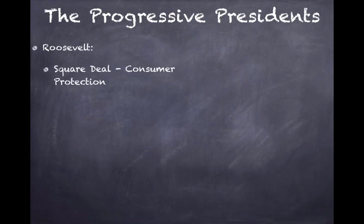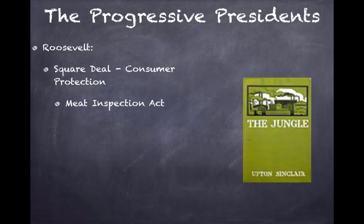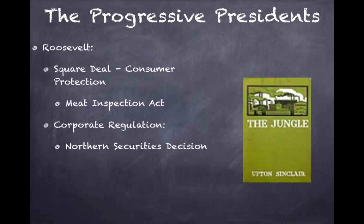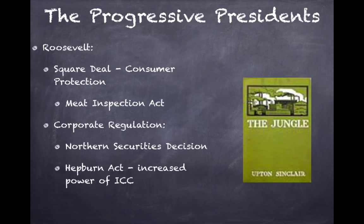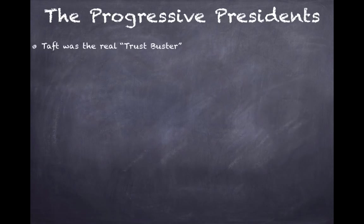Progressive presidents to know: Roosevelt's Square Deal focused on consumer protection, such as the Meat Inspection Act; corporate regulation, such as the Northern Securities Decision, which broke up J.P. Morgan's company; and the Hepburn Act, which increased the power of the ICC, the Interstate Commerce Commission. He was also big on conservation of natural resources — we'll talk more about that in a few minutes.